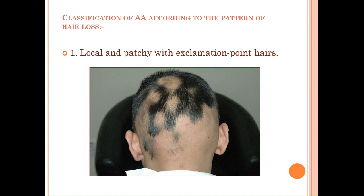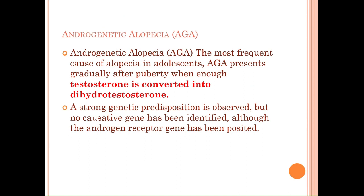Alopecia areata can look like patches or diffuse hair loss — it varies. Treatment usually involves a dermatology referral or, if you're in the UK, a GP may prescribe topical cortisone ointments or cortisone injections. Dermatology may offer phototherapy as well. It is generally reversible unless left untreated for a long time, as the follicle can shrink but rarely scars.